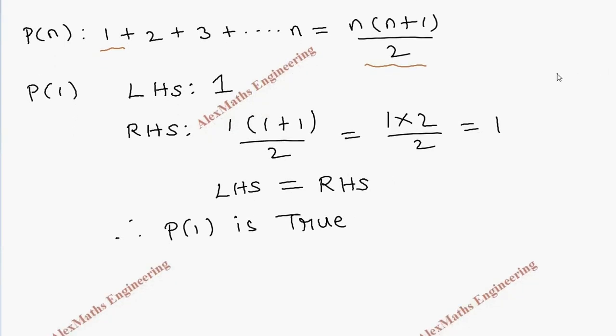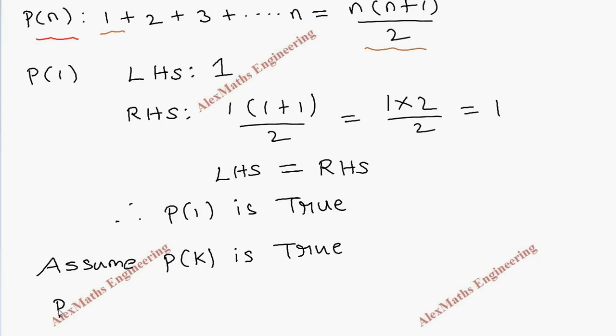Now we are going to write this expression in terms of k. That is, we are going to assume P(k) is true. When P(k) is true, then P(k) expression is 1 + 2 + 3 + ... + k = k(k+1)/2. Now we have to prove P(k+1) is true.